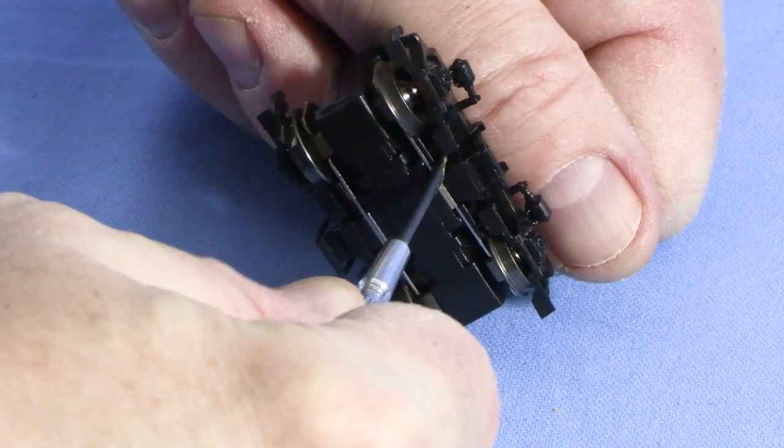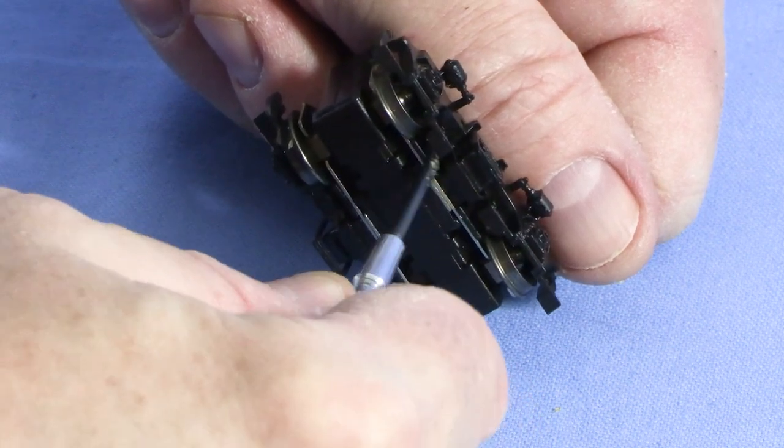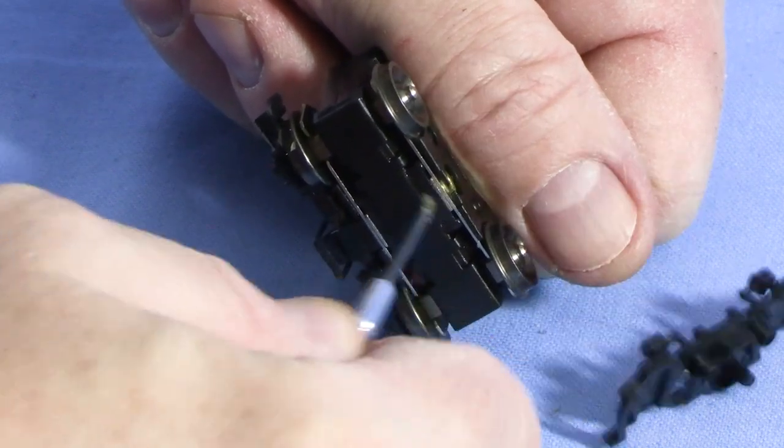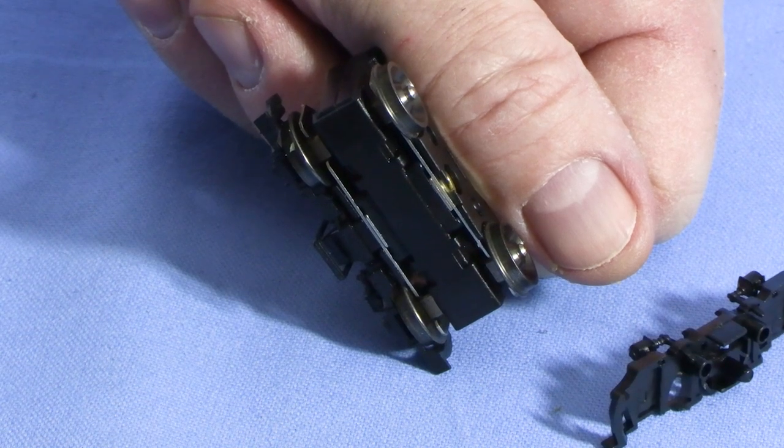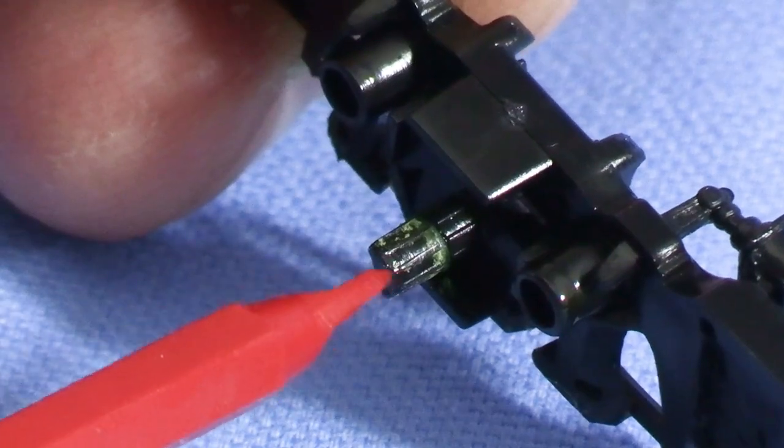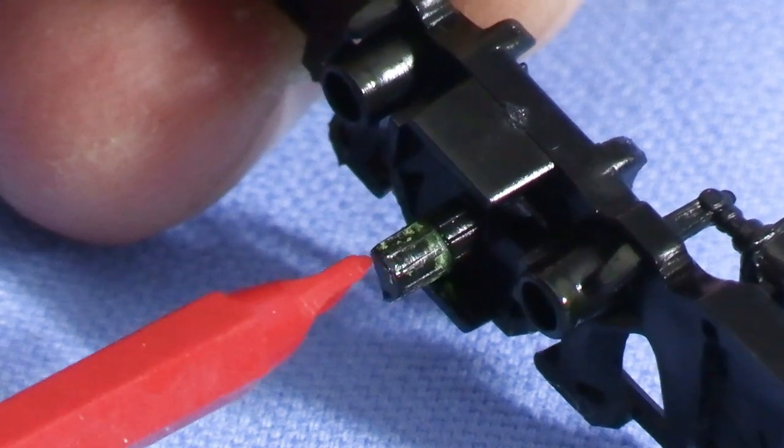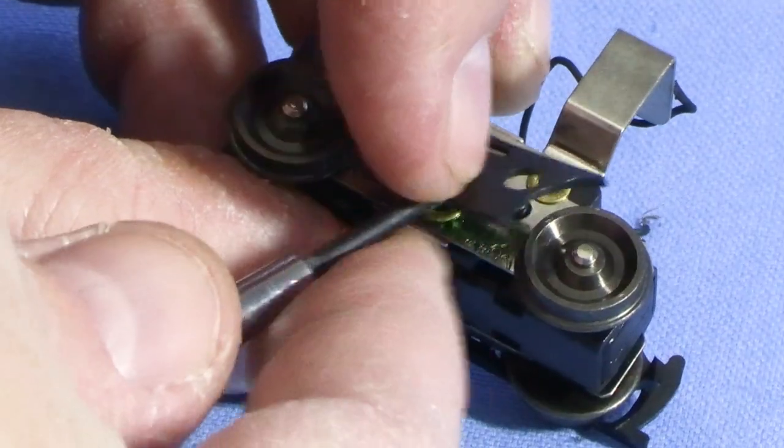Next, I'll disassemble the trucks. I like to work on one at a time. I'll start by using a small flat bladed screwdriver with a twisting motion to pry off the side frames. Be careful as you don't want to break the pin on the back that fits into the mechanical part of the truck. This black plastic piece should now come off easily.